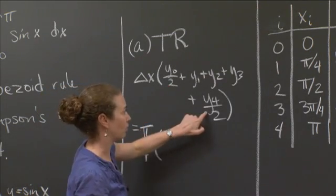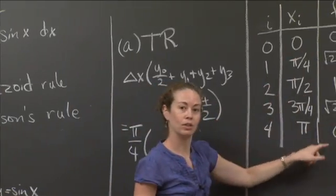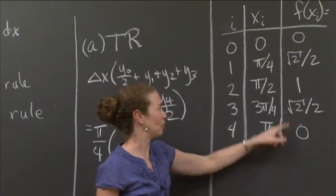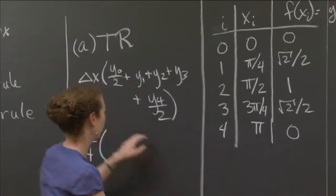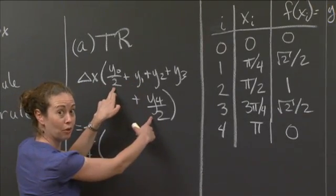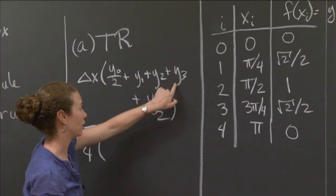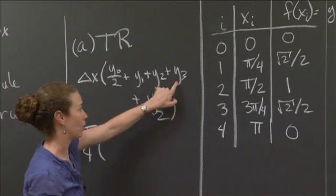So we get pi over 4. And then let's look at our values. Well, y0 and y4 are both 0. So I'm going to not even put those in. You'll see 0 there, 0 there. So these two are both 0. And so I just have to substitute in these values, y1, y2, and y3.